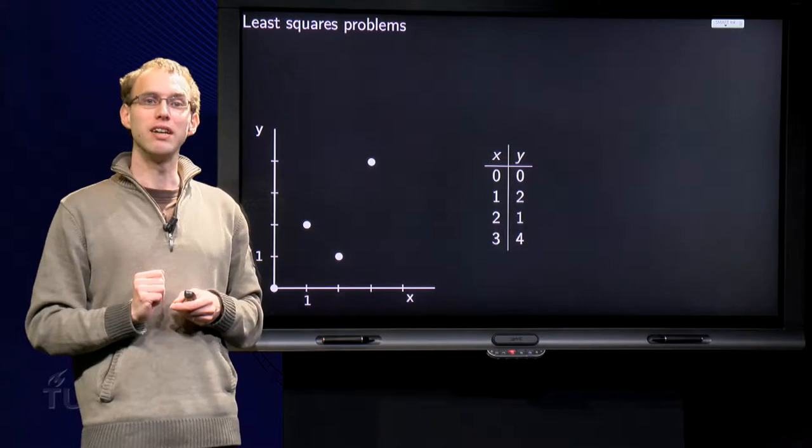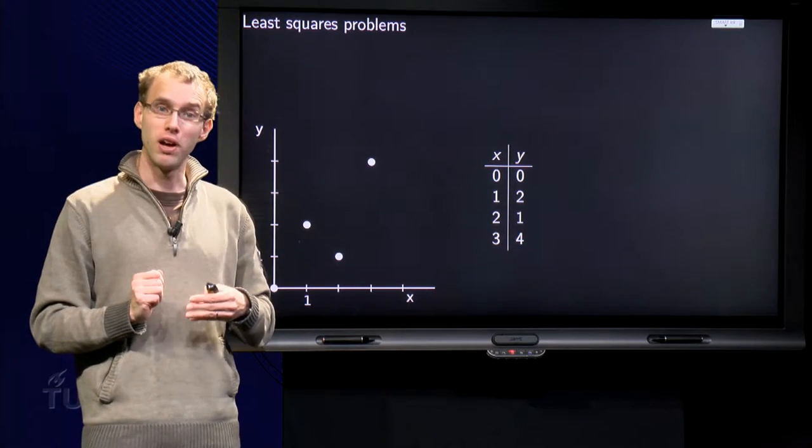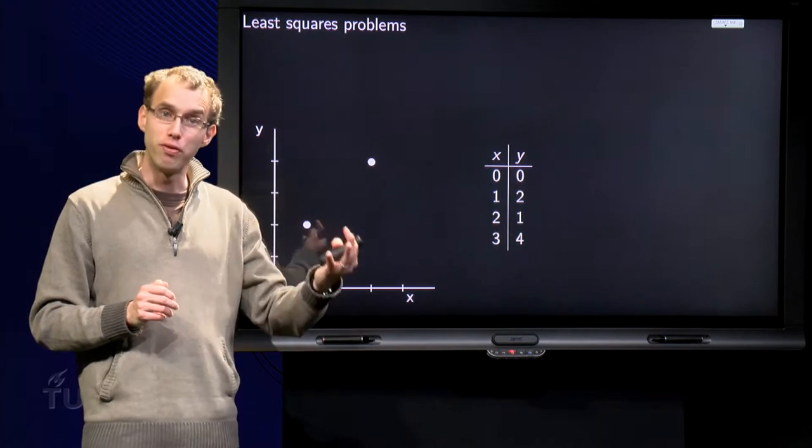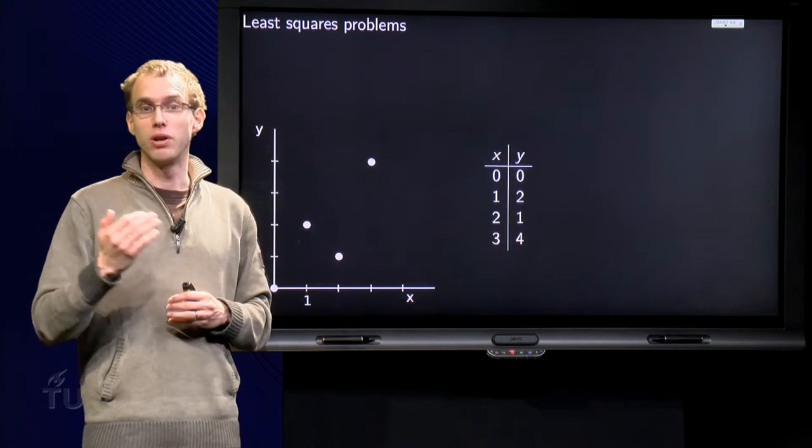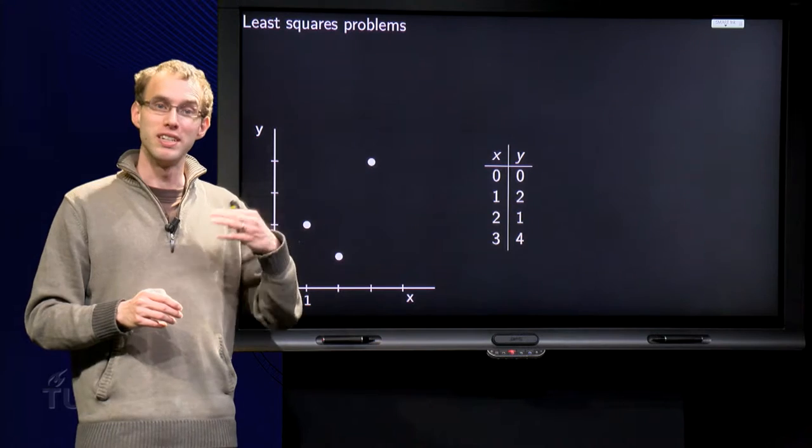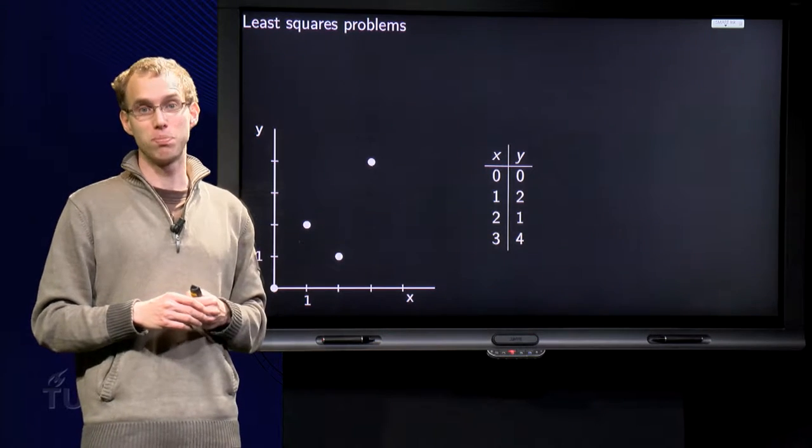y equals some constant plus some other constant times x. From the first constant you can find or compute the equilibrium position. From the second constant, the spring constant.